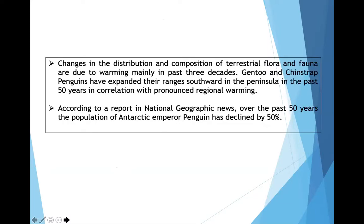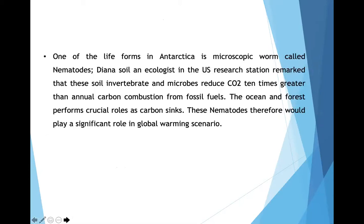Changes in the distribution and composition of terrestrial flora and fauna are due to warming mainly in the past three decades. Gentoo and chinstrap penguins have expanded their range southward in the peninsula over the past 50 years in correlation with pronounced regional warming. According to National Geographic News, over the past 50 years the population of Antarctic emperor penguins has declined by 50%. One of the life forms in Antarctica is a microscopic worm called nematodes. Researchers at a US research station remarked that these soil invertebrates and microbes reduce CO₂ ten times greater than annual carbon combustion from fossil fuel. These nematodes would therefore play a significant role in the global warming scenario.